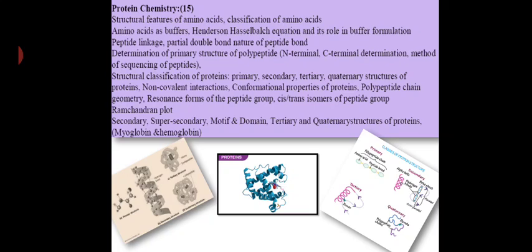Under the title of Protein Chemistry, the first subtopic is structural features of amino acids and classification of amino acids. You already know that proteins are made up of long chains of polypeptides, which are nothing but polypeptide chains of amino acids. So we need to study the basic structure of amino acids, their functional groups, and how they are classified.